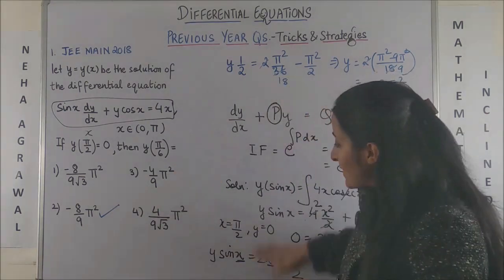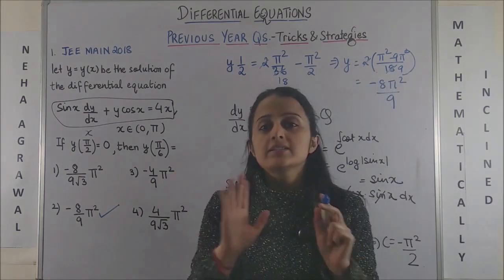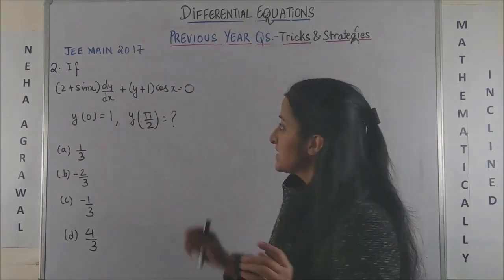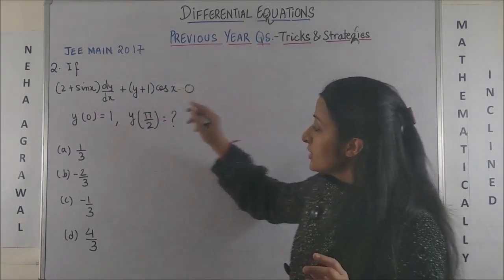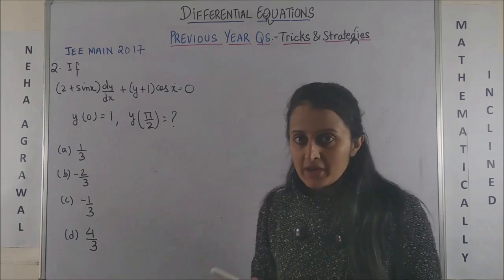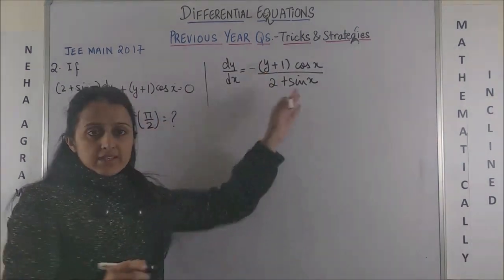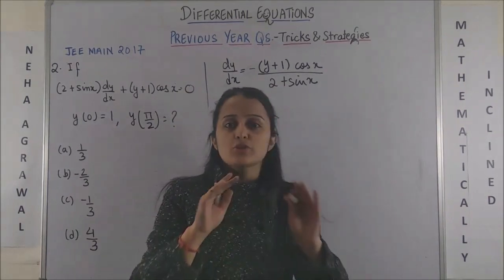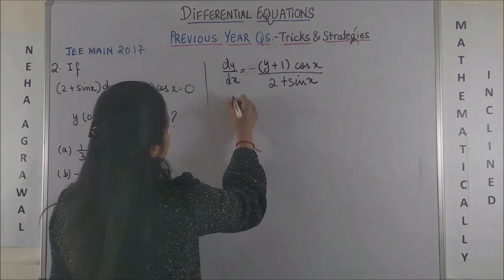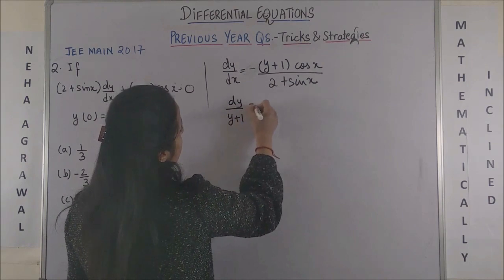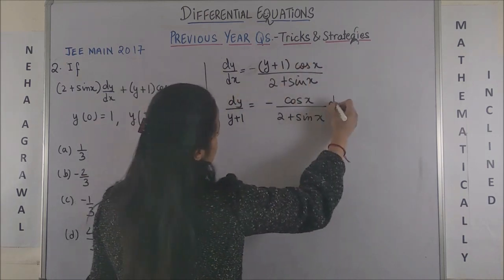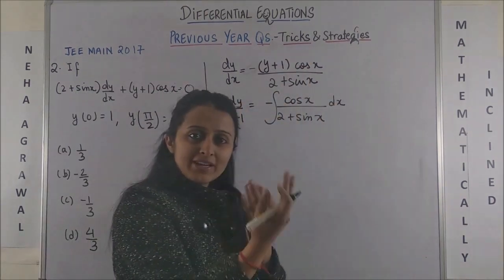Trust me, right now I am explaining each and every step — when you solve on your own, it does not take more than 2 minutes. Coming to JEE Mains 2017: you are given y(0) = 1, meaning when x = 0, y = 1, and you have to find y(π/2). This is certainly not a homogeneous differential equation. Is it variable separable? Yes — you can take the (y+1) term with dy, leaving cos x upon (2 + sin x) with dx. Moving dx to the other side, we have separated out the variables.